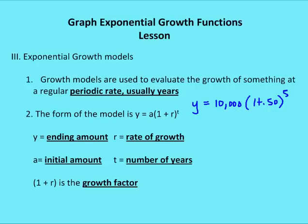Using a calculator: I type in 10,000 and multiply by 1.5 to the fifth. I get approximately 75,938. So after five years of exponential growth, the ending amount is about 75,938.